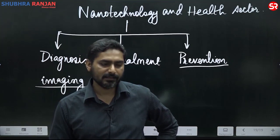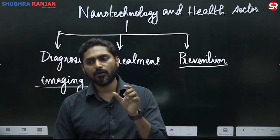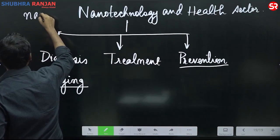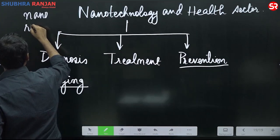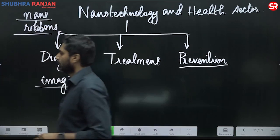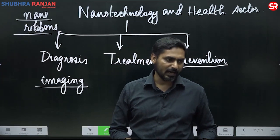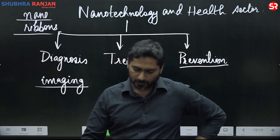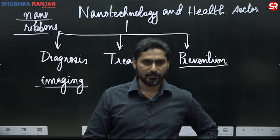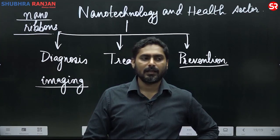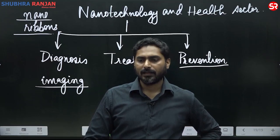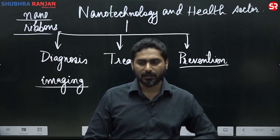Next example in treatment: graphene nanoribbons are used to help repair spinal cord injuries.